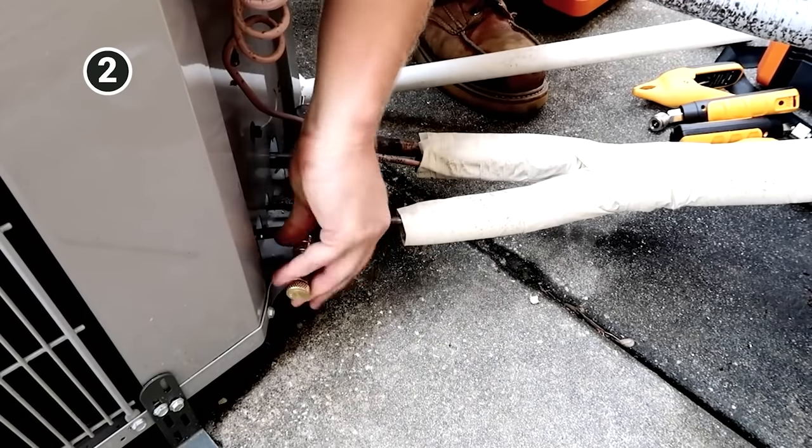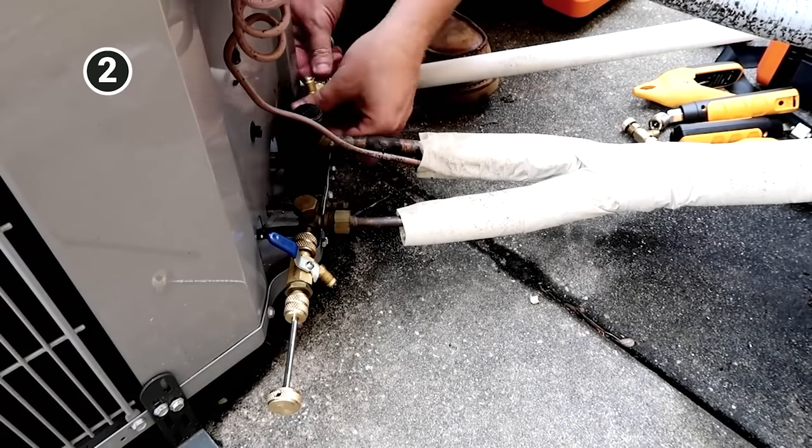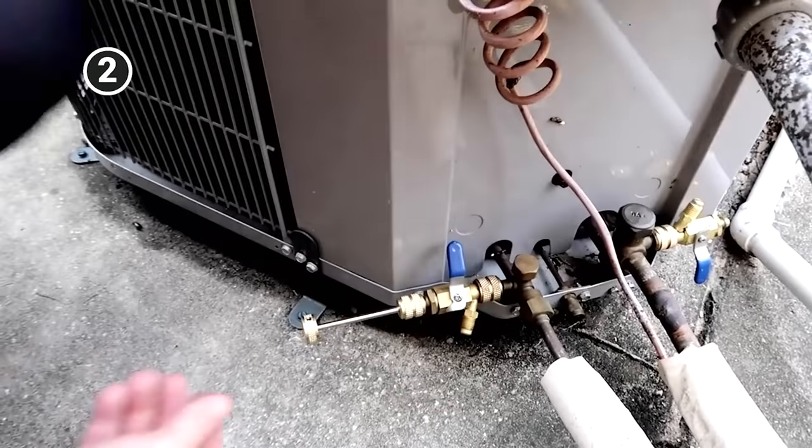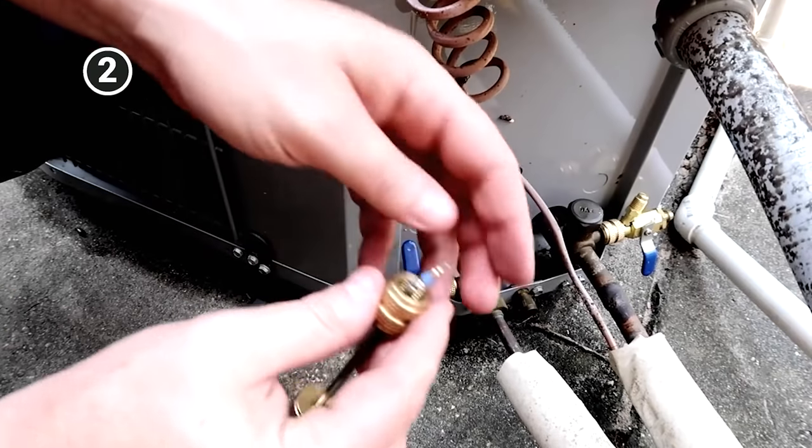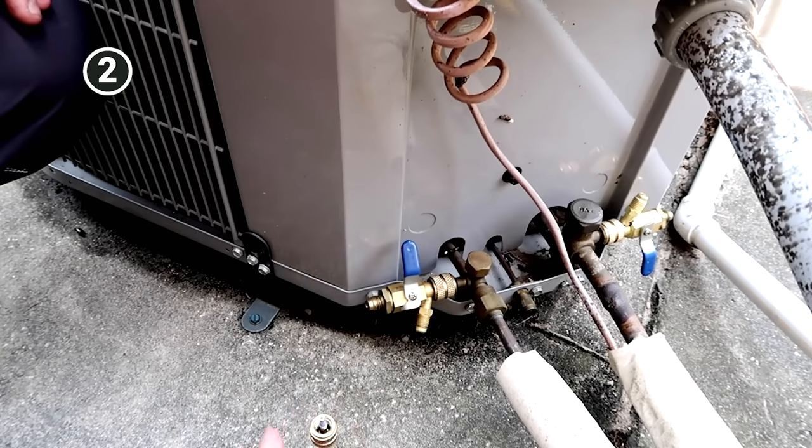If you want to go ahead at that point and pull your cores out, put your core remover tools on. That's going to be a really good practice just to help prevent anything from getting in that system, especially if you're going to be cutting that system out or maybe even unsweating certain parts of it, which sometimes that's just a practical thing to do. You want to have a little bit of nitrogen flowing at that point.